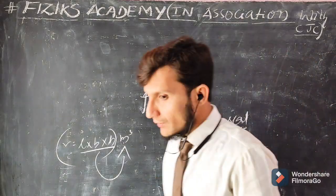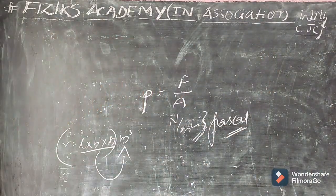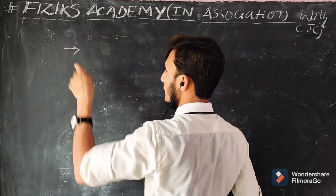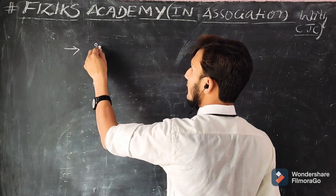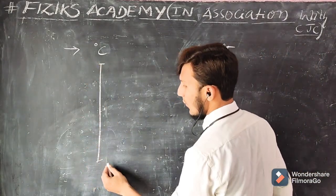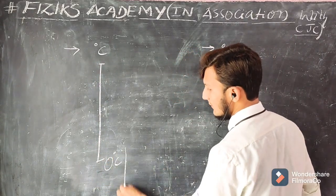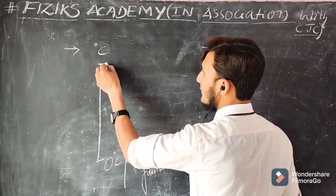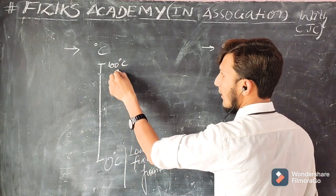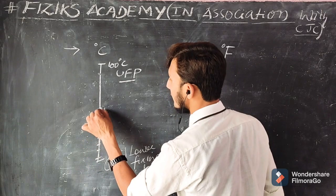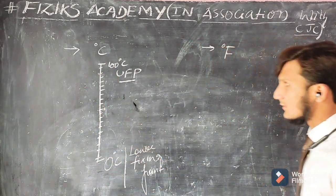Apart from this, we have a distinction between the degree Celsius scale and the degree Fahrenheit scale. On the Celsius scale, the lower fixing point is zero degree Celsius and the upper fixing point is 100 degree Celsius. In between these, there are 100 equal intervals, each corresponding to one degree Celsius.